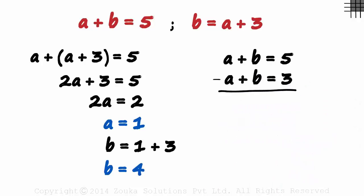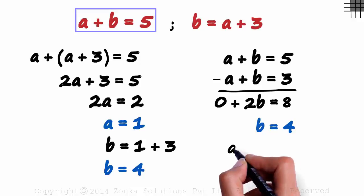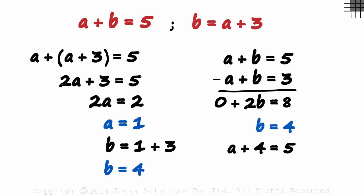Now all we need to do is add these two equations. A plus minus A gives us 0. B plus B gives us 2B. And 5 plus 3 equals 8. We get the value of B as 4. Once we get the value of B as 4, we can substitute it in any of the equations to get A. Substituting it in the first equation, we get A plus 4 equals 5. And we get the value of A as 1.